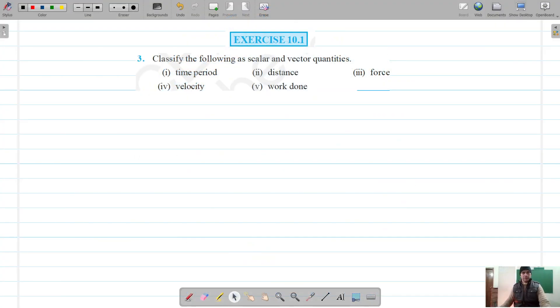Next question is question number 3, and we have once again to classify these as scalars and vectors. First one is time. Time period has no direction but only a magnitude, let's say 10 seconds.